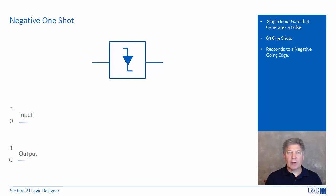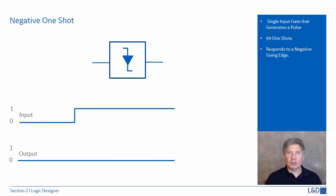The graph shows the relationship between the input and output of a negative one-shot. On the negative transition of the input, a short-duration pulse is generated on the output.